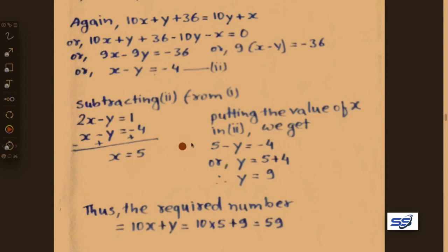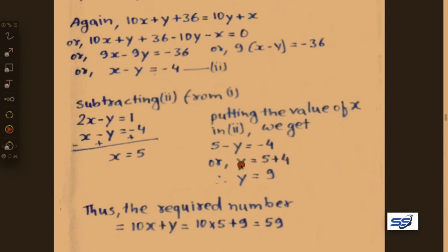Putting x equals 5 into equation 2: 5 minus y equals minus 4. Rearranging: y equals 5 plus 4, therefore y equals 9.